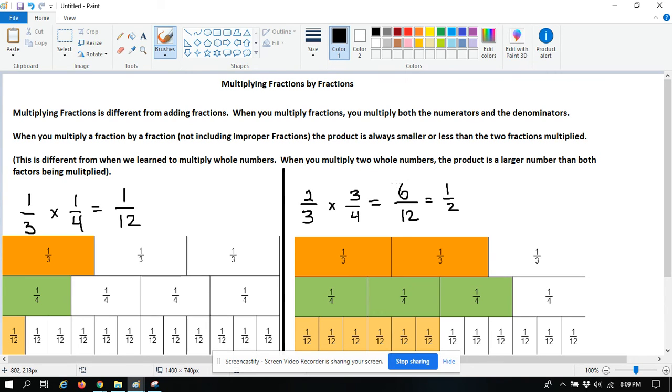But now look at our product, six twelfths. Six twelfths is exactly half of twelve, so it's one half. So our product actually got a lot smaller. Two out of three times three out of four gave us six out of twelve. And our product is smaller than the two fractions that we multiplied.